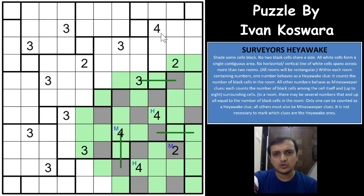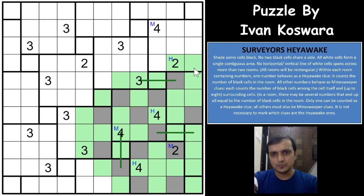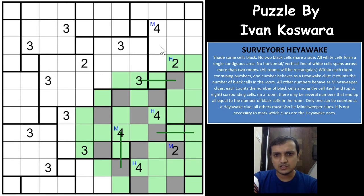There is good logic here. This cell cannot be a Heyawake clue because there is only one way to fulfill it, and then the 2 cannot fulfill the Minesweeper clue. You have 3 cells already shaded, which means this will be the Minesweeper clue and this has to be the Heyawake clue. Since this is the Heyawake clue, one of these 4 cells will be shaded and the others will be unshaded — let us see which one that is.